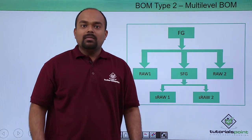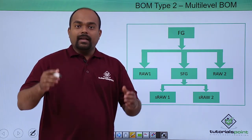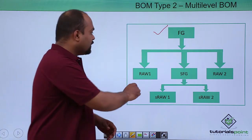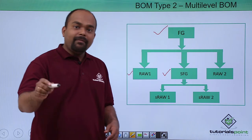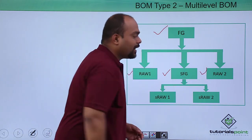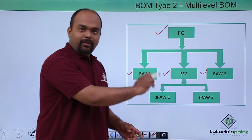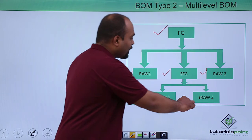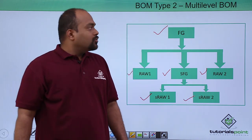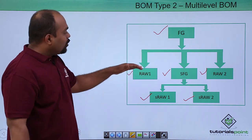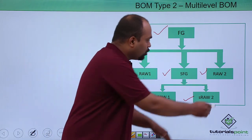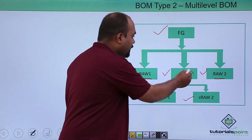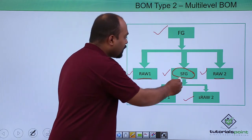The next type is the multilevel BOM. In a multilevel BOM, there is one finished good, and under that finished good there is a raw material, a semi-finished good, and another second raw material. Under this semi-finished good, there is another raw material — sraw1 and sraw2 are required. So to manufacture this finished good, there are two raw materials and one semi-finished good, and that semi-finished good itself has two raw materials.